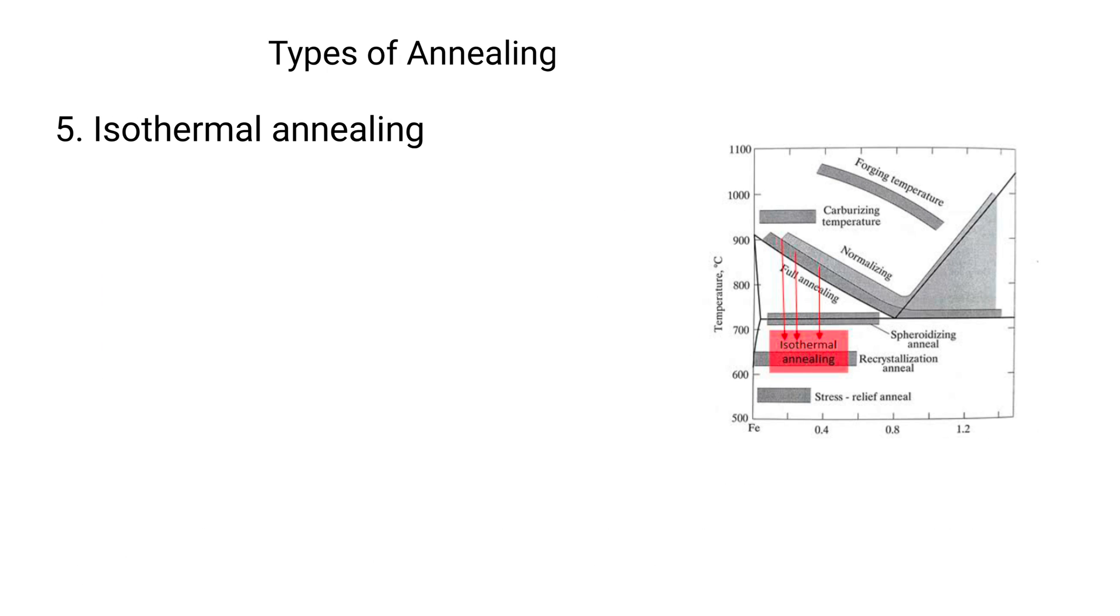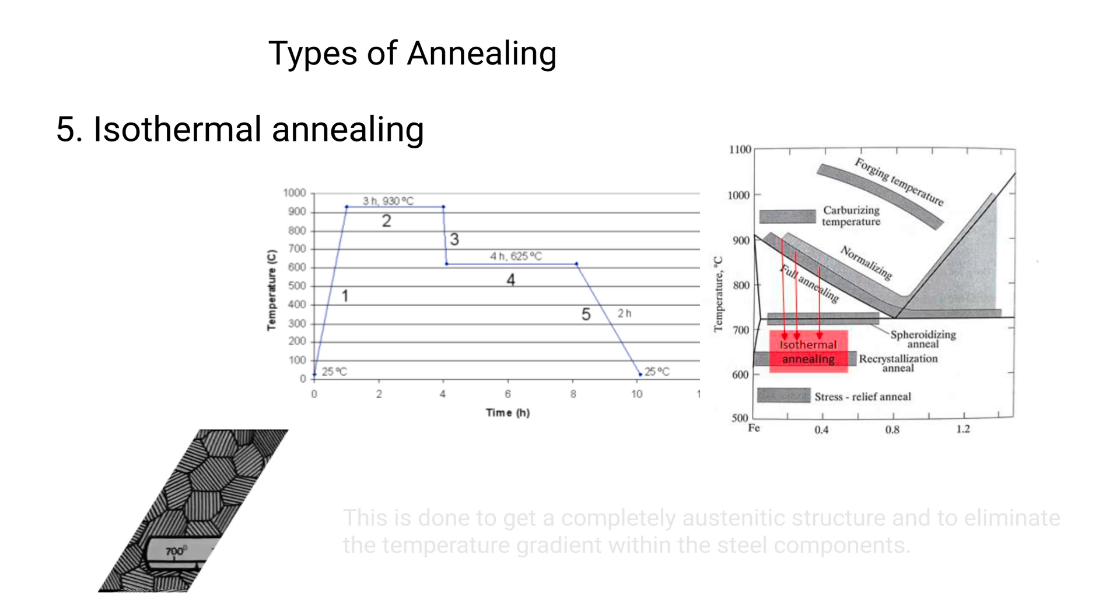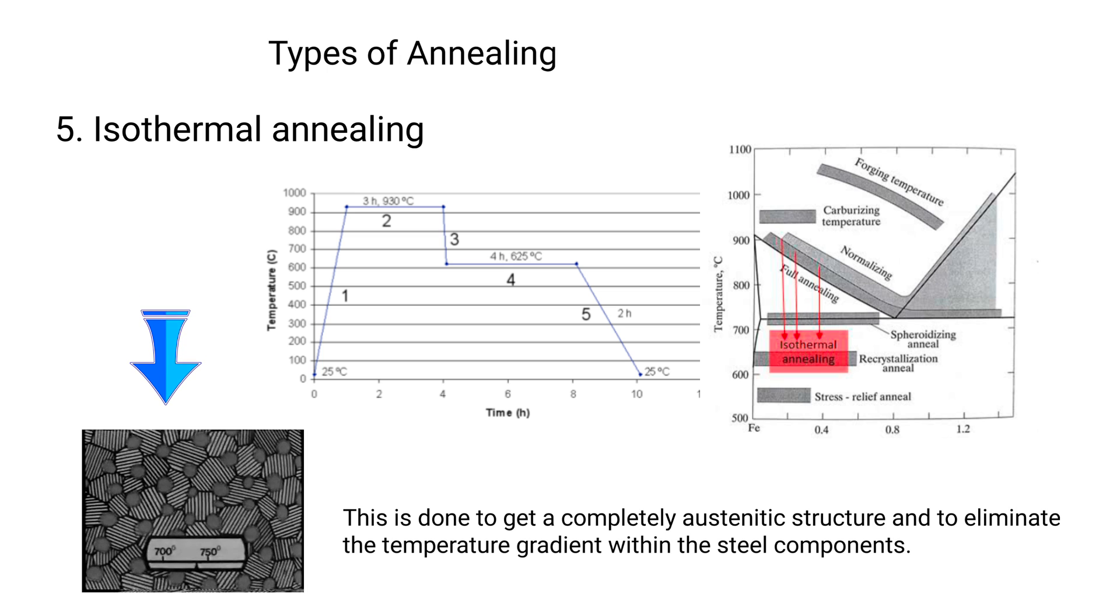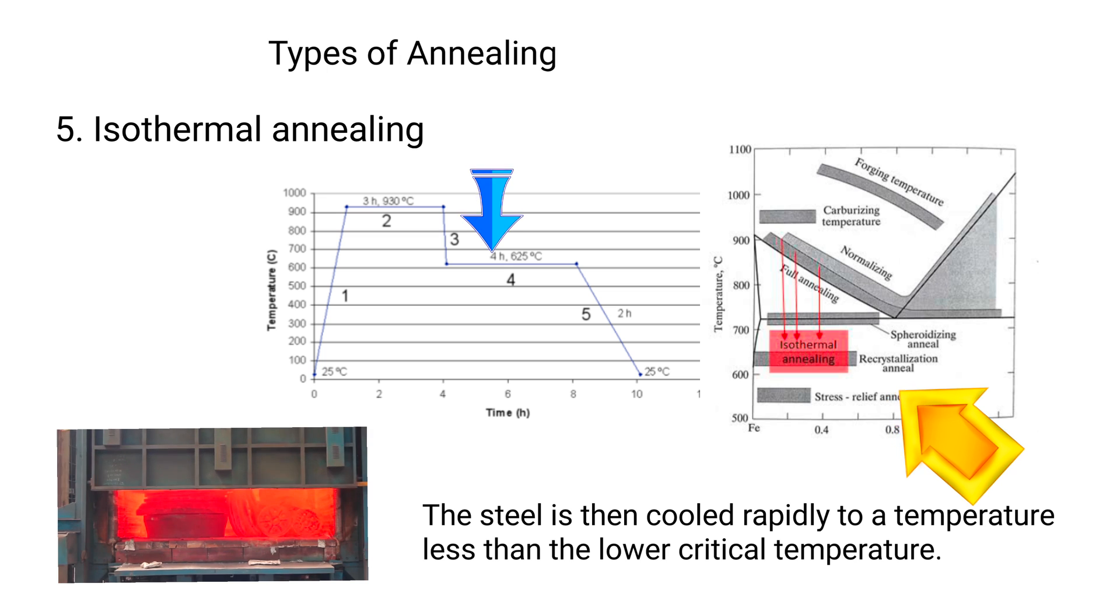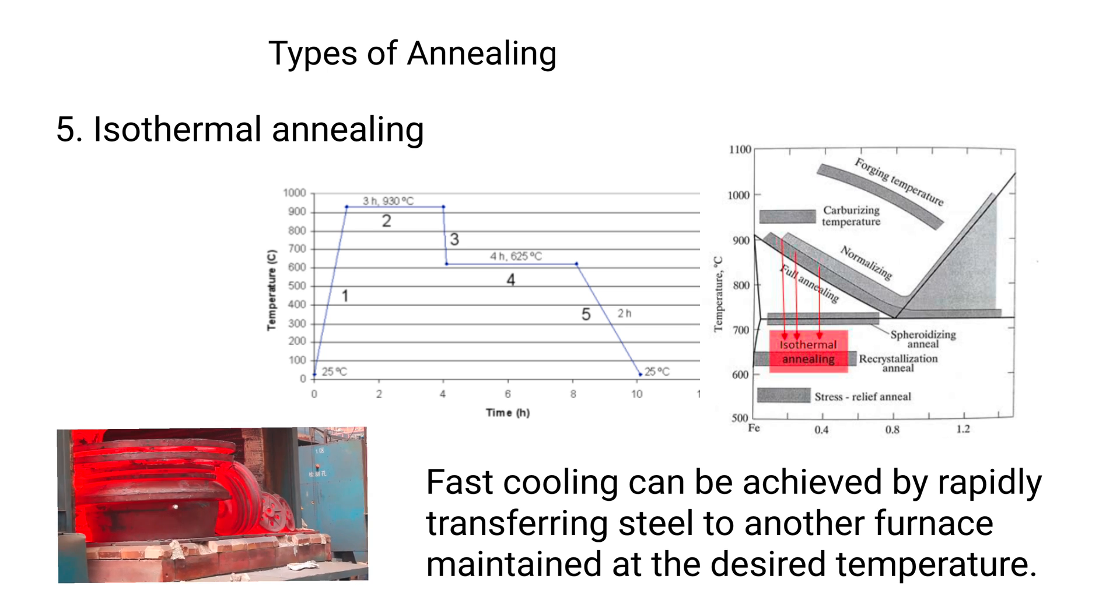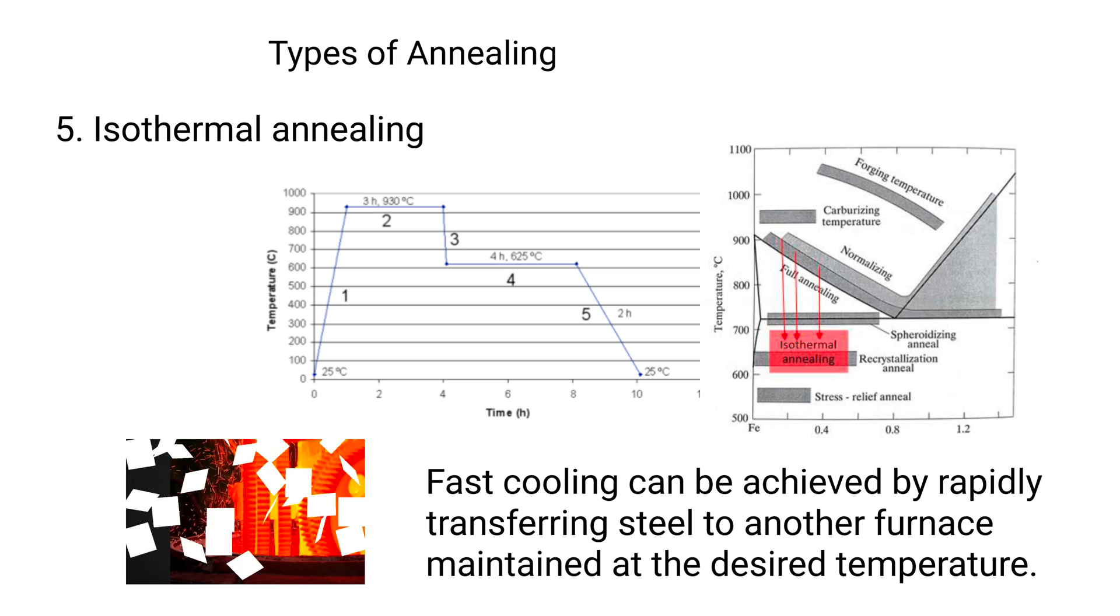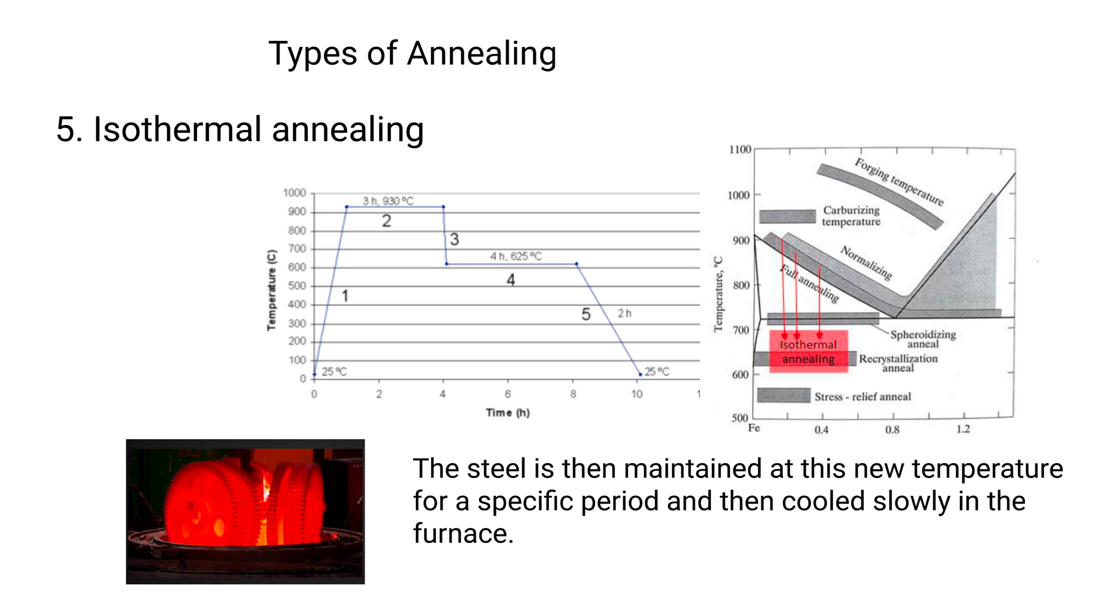5. Isothermal annealing. In this process, hypereutectoid steel is heated above the upper critical temperature and held for some time at this temperature. This is done to get a completely austenitic structure and to eliminate the temperature gradient within the steel components. The steel is then cooled rapidly to a temperature less than the lower critical temperature. Fast cooling can be achieved by rapidly transferring steel to another furnace maintained at the desired temperature. The steel is then maintained at this new temperature for a specific period and then cooled slowly in the furnace.